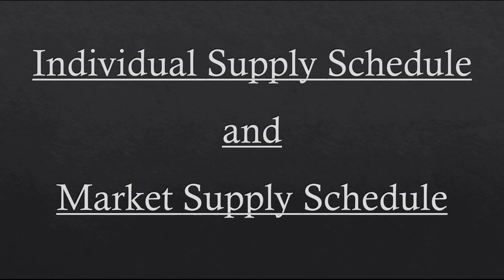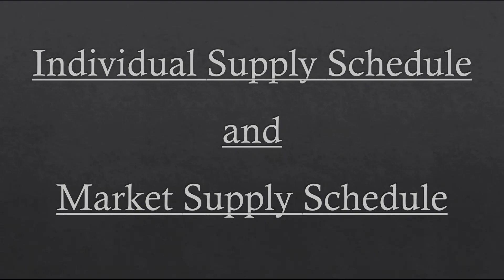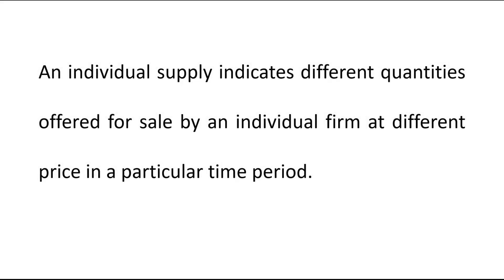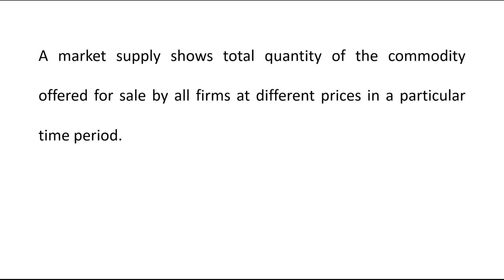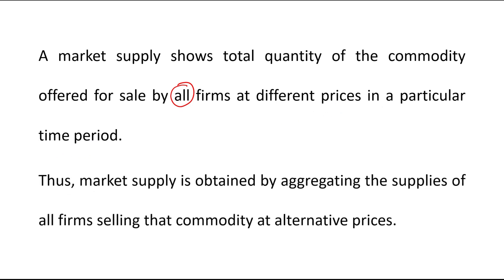The next topic is individual supply schedule and market supply schedule. An individual supply indicates different quantities offered for sale by an individual firm at different prices in a particular time period. A market supply shows the total quantity of the commodity offered for sale by all firms at different prices in a particular time period.